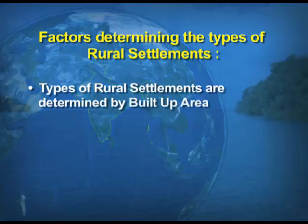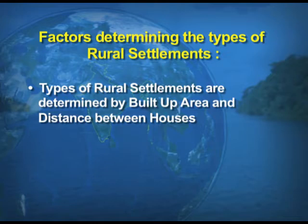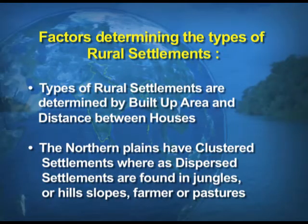Types of rural settlements are determined by the built-up area and the distance between houses. For example, in the northern plains we have clustered settlements — grouped together in one particular area — whereas dispersed settlements are scattered apart, found in jungles, on hill slopes, or in pasture land.